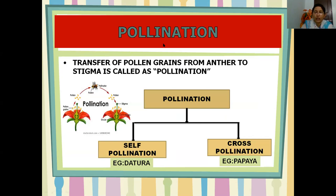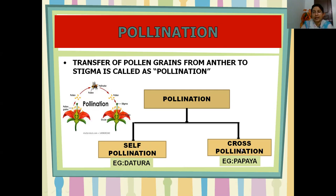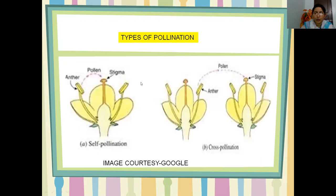The next topic is pollination. Pollination means the transfer of pollen grains from the anther to the stigma of a flower. The anther has pollen grains and is the male part; the stigma is the upper part of the female part. If pollen grains are transferred from anther to stigma, it is called pollination. Pollination is of two types: self-pollination and cross-pollination. Self means within; cross means from one to another. The example for self-pollination is datura and for cross-pollination, papaya.